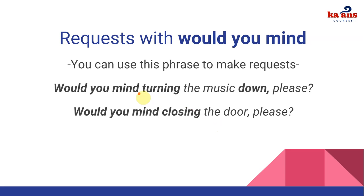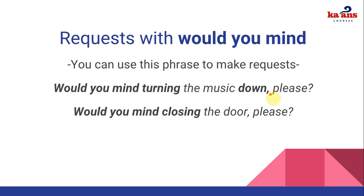Finally, we quickly saw requests with 'would you mind.' What was important here is that the verb must be used with -ing. For example: 'Would you mind turning the music down, please?' Even though the phrasal verb is split, we still need to include the -ing with the main verb — you cannot put the -ing with the preposition. 'Would you mind turning?' 'Would you mind closing?' It's important that you have the -ing form.